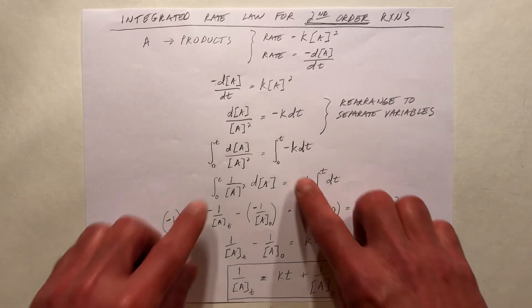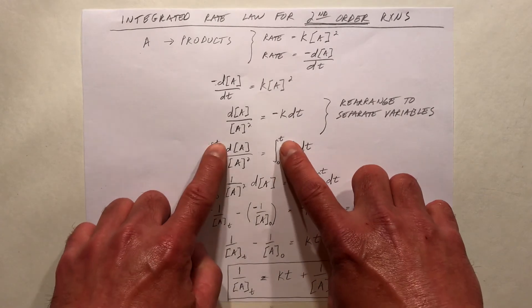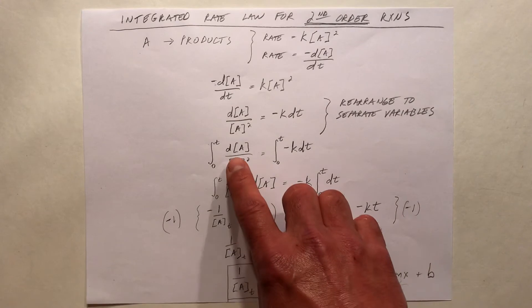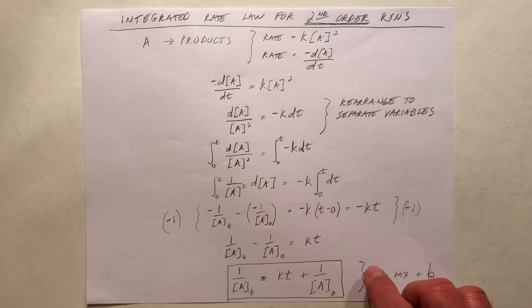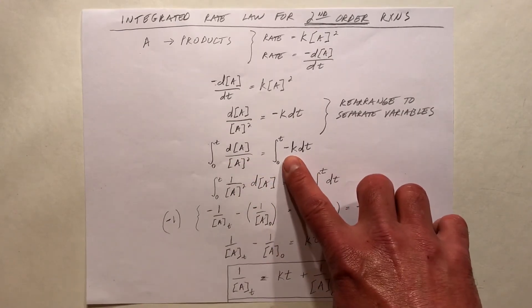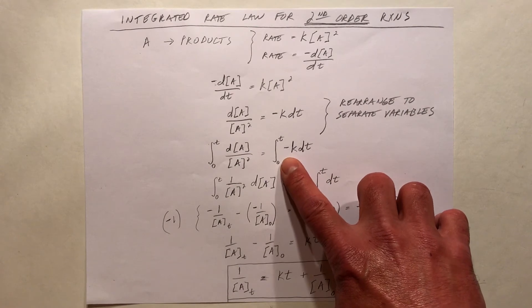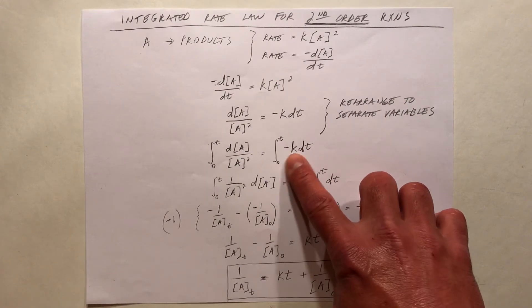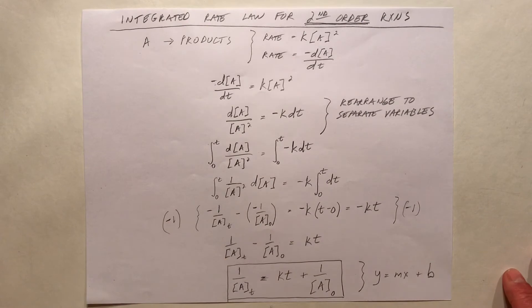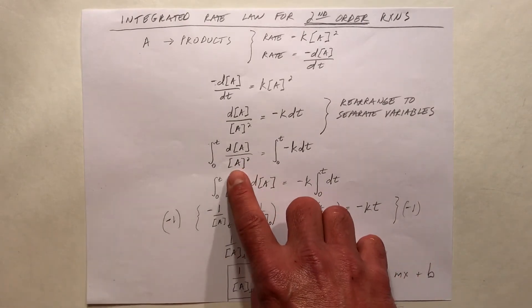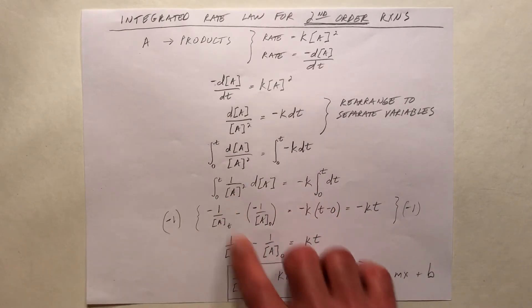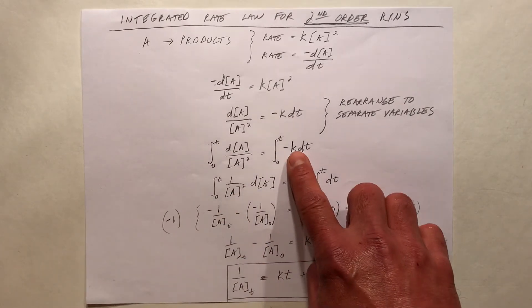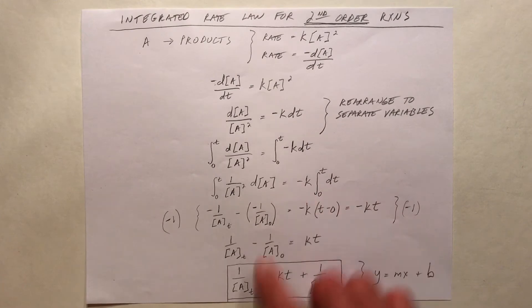We're going to integrate from a lower limit of zero to an upper limit of T: d[A] over the concentration of A squared. And on this side, we're going to integrate from zero to T: negative K dt. We can factor 1 over [A] squared out, and factor the negative K outside of the integral sign.